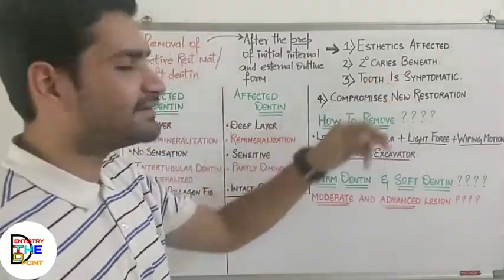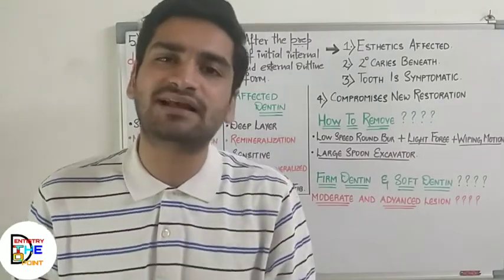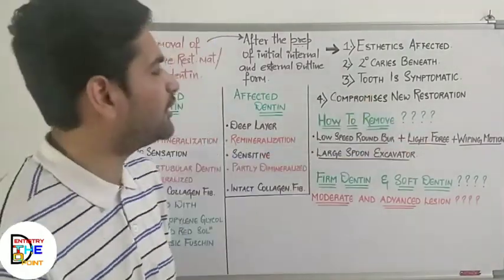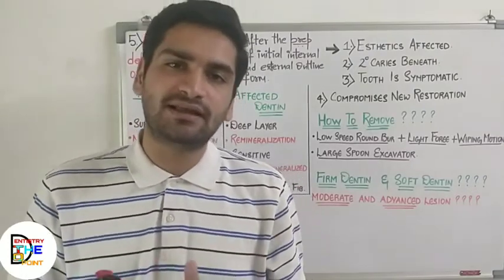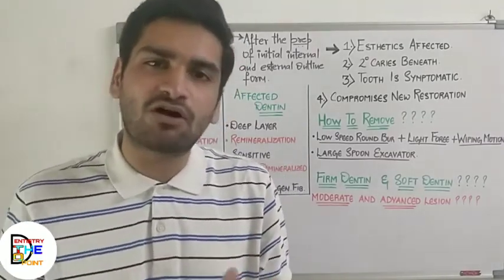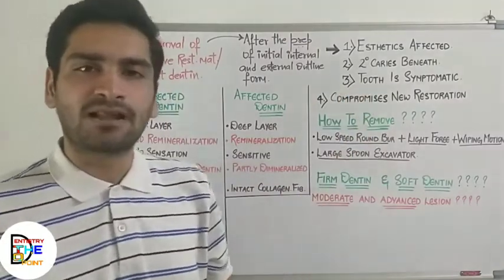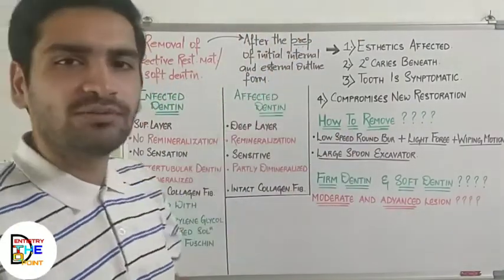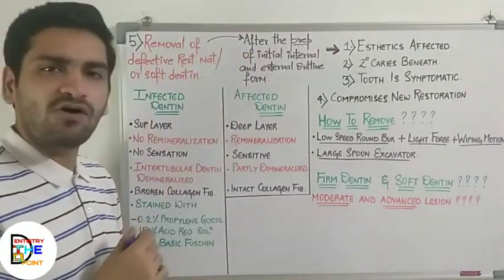The second reason is secondary caries — whenever infected dentine is left within the cavity, there are chances of secondary caries beneath the material. Third, if the tooth is symptomatic you need to remove the old material. Lastly, the old restorative material compromises the physical or mechanical properties of the new restorative material. These are the reasons why you need to remove the old restorative material or infected/soft dentine.